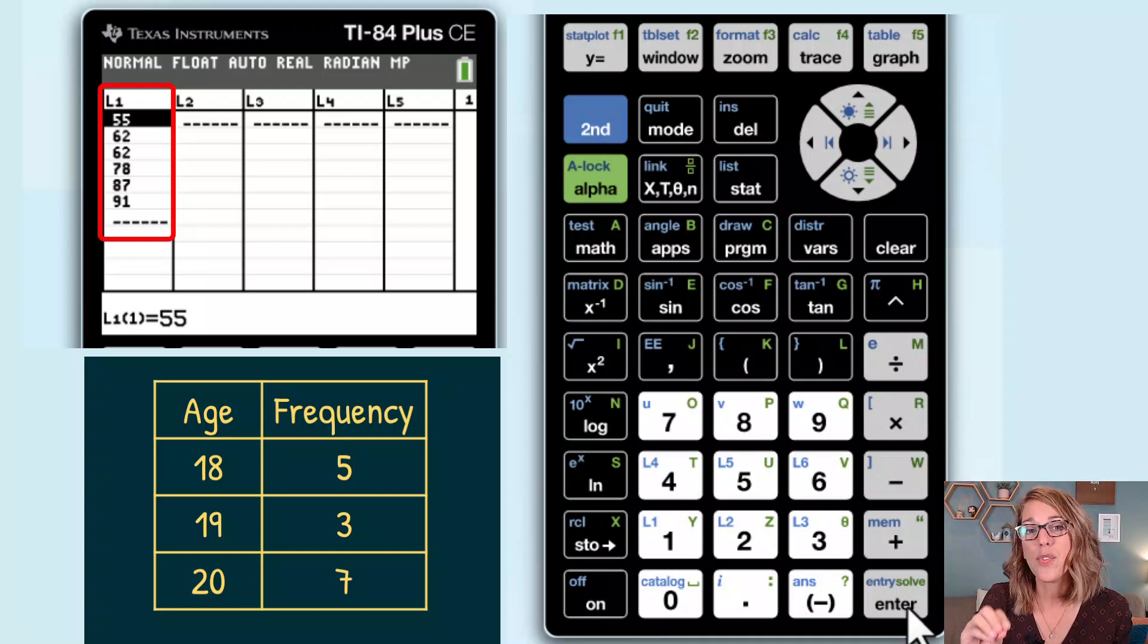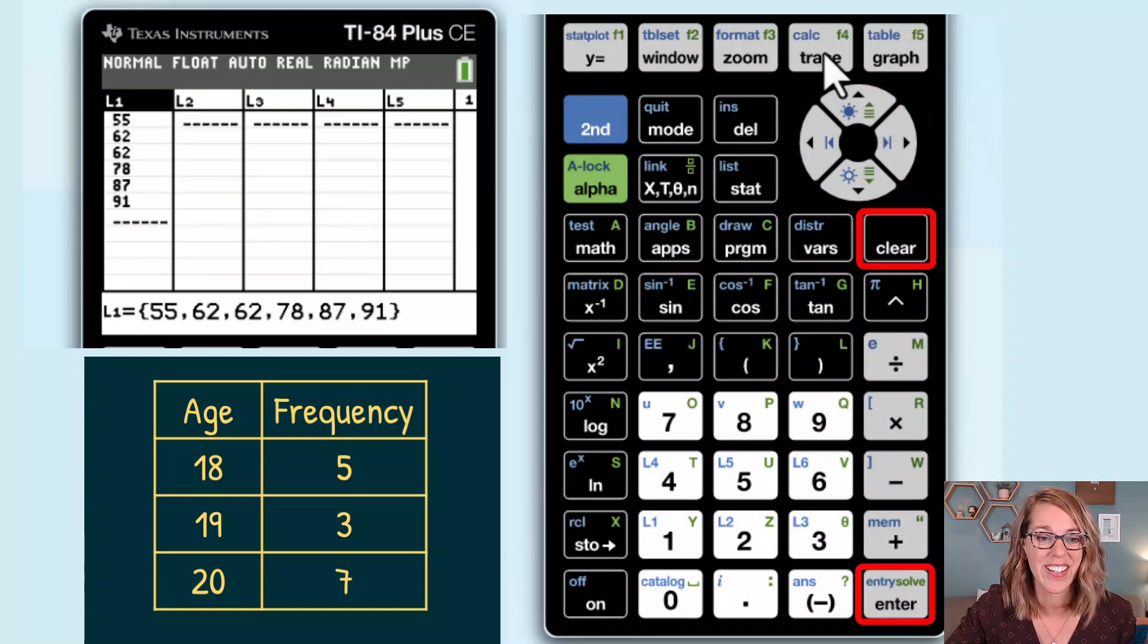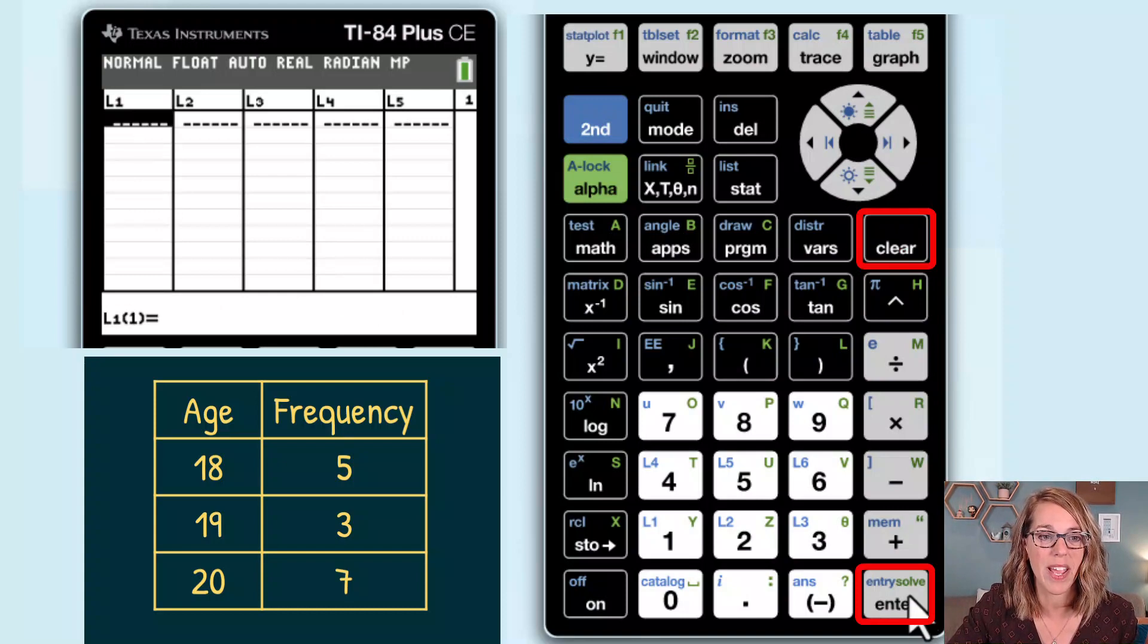I've got data already in here. You might not, but because I do, I'm going to arrow up to the list name, and then I'm going to hit clear and enter. Don't do delete. So we're going to hit clear followed by enter.